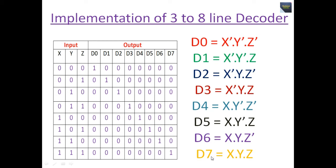D0 is high when X, Y, and Z are all 0, so D0 = X complement · Y complement · Z complement. Similarly, D1 = X complement · Y complement · Z, and so on. The outputs of the decoder are nothing but the minterms of n input variable lines when the decoder is enabled.